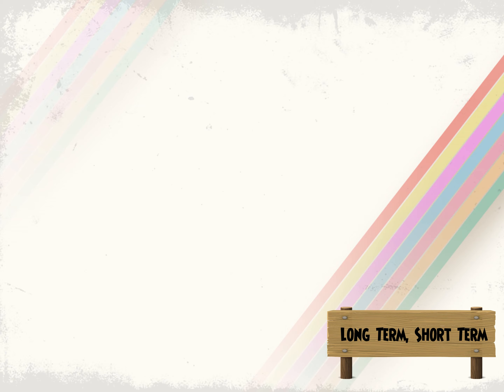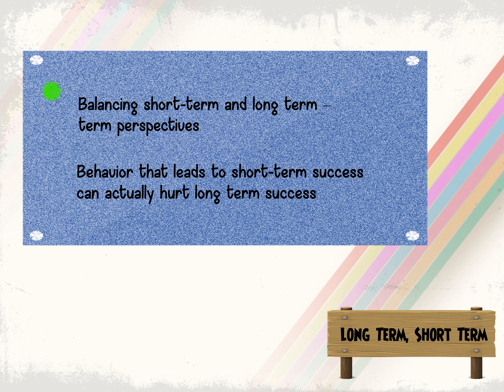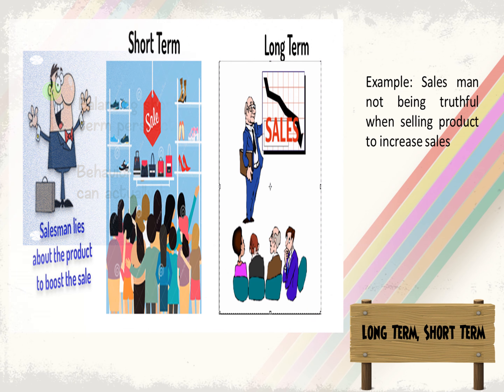The second principle is Long Term vs Short Term. In systems thinking, you need to find the balance between short-term and long-term perspectives. Behavior that leads to short-term success can actually hurt long-term success. For example, a salesman trying to sell as much as possible to get commission and profit.